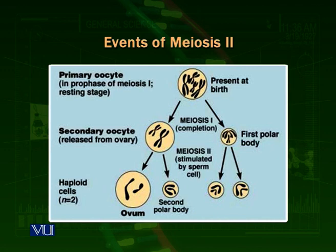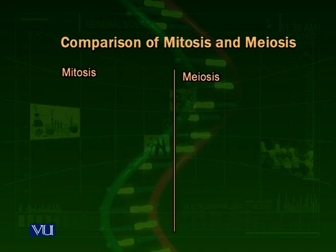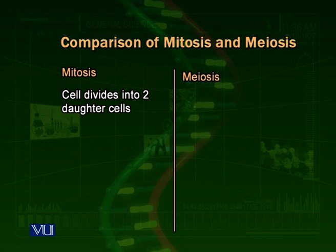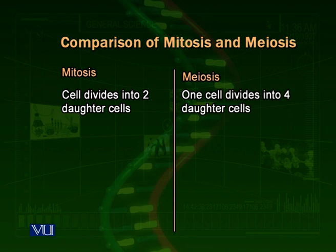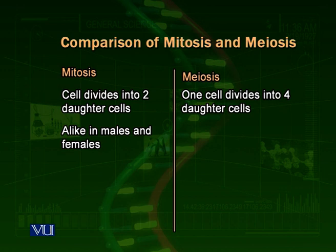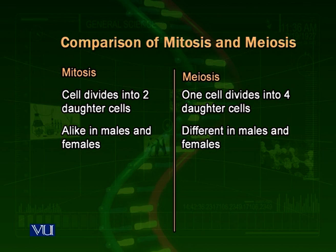So there is a difference between meiosis in males and females in this regard. Comparing mitosis and meiosis: mitosis divides one somatic cell into two daughter cells, but in meiosis, one parent cell divides into four daughter cells. In mitosis, division is alike in males and females, but meiosis is different — in females, three are polar bodies and one is an ovum, while in males all four products are sperms.